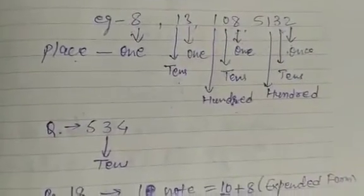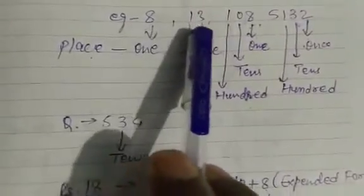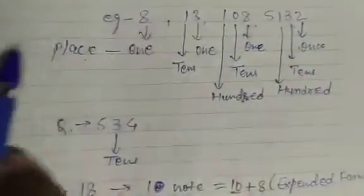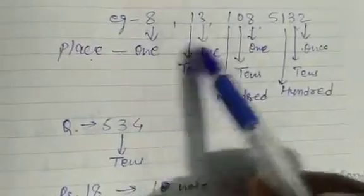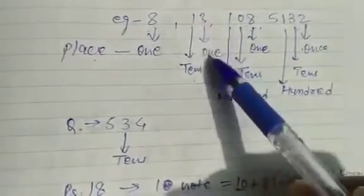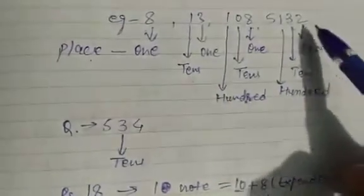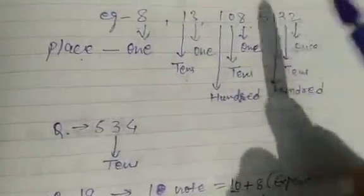Look here — I am taking some examples: 8, 13, 108, 5132. As you know, the rightmost is the ones place, next is tens place, then hundreds place, then thousands place. These are the place positions of each digit.